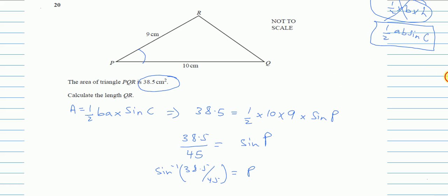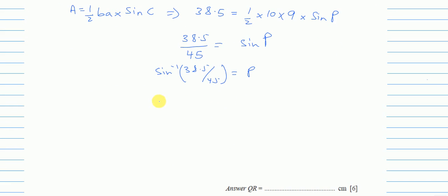So it will be sine inverse of 38.5 over 45 equals my angle P which is 58.82. Let me scroll down, which is 58.82. Now I am not rounding off this one because this is not my final answer. I have just kept this value in my calculator.